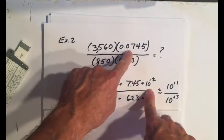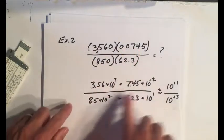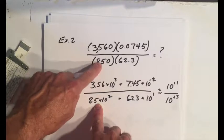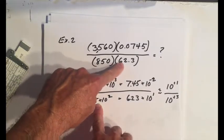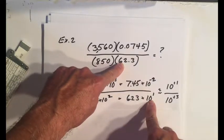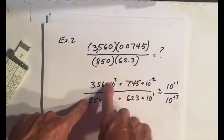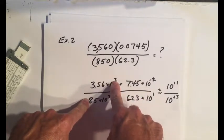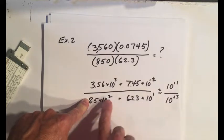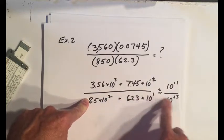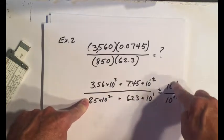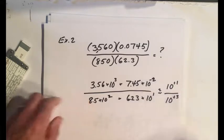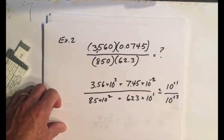3 in this case, 1, 2 in this, minus 2 in this case on the bottom denominator, 2 for 850, 1 for 6.23. And then if you just add up the exponents, you get 3 minus 2 is plus 1 on the top. 2 plus 1 is plus 3 on the bottom. And of course, when you divide exponents, you subtract them. So that will be times 10 to the minus 2.